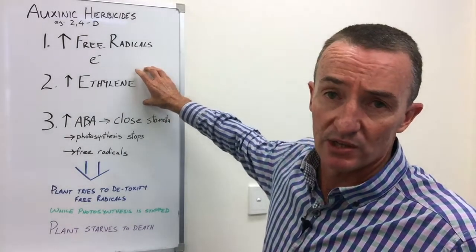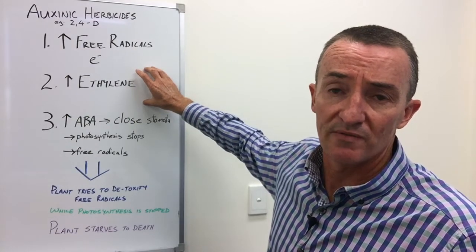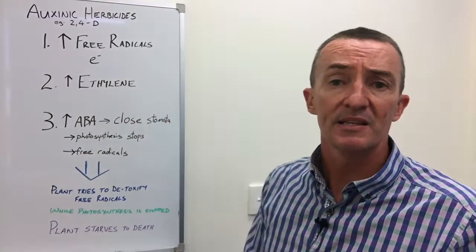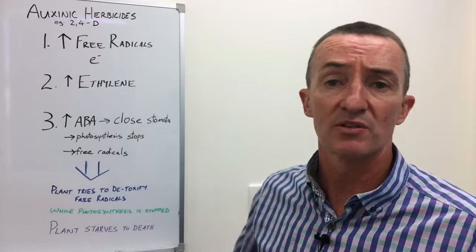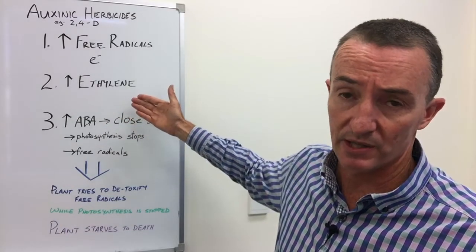Secondly, ethylene production goes up. Ethylene is a hormone that's involved in fruit ripening. In this case, it causes cells to swell and is also linked to extra free radical production.